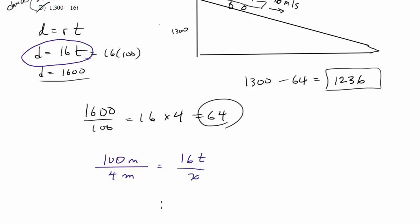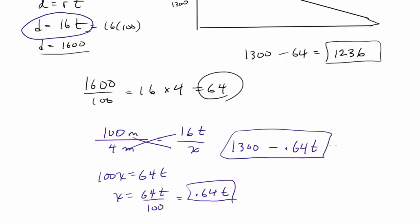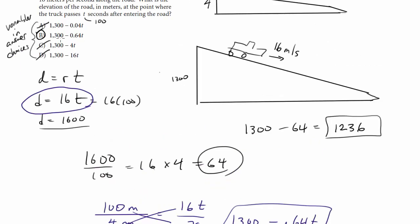So let's solve this for x. We're going to get x equals or 100x equals cross multiplying 64t so x is equal to 64t divided by 100 which is the same thing as 0.64t. So this is how much I'm dropping traveling for t seconds so if I'm starting out at 1300 I'm just going to subtract this 0.64t and as you see that's also choice b.